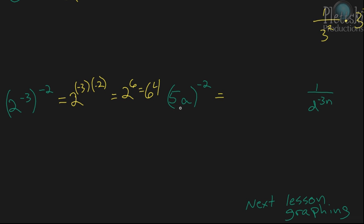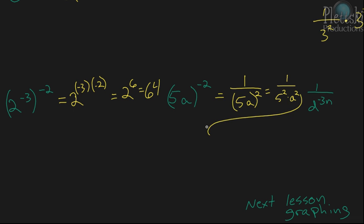This next one: 5a to the negative 2 power. We write the reciprocal, so 1 over 5a squared, which is the same as 1 over 5 squared times a squared. Well, 5 squared is 25, and then you still have the a squared. So it's 1 over 25a squared, and that's our answer.